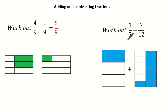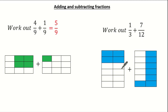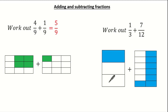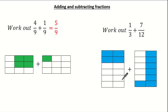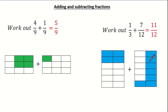The lowest common multiple of 3 and 12 is 12. So now I can convert my 1 third into 4 twelfths, and you can still see this is exactly the same as our 1 third. Now it's super easy to add. So here we have our 4 twelfths and here we have our 7 twelfths, thus giving me an answer of 11 twelfths.